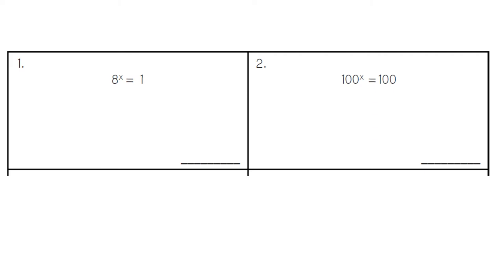In this case, 8 is our base number. We're missing the exponent, which is located by the variable, and we know that the answer is 1. Our exponent is going to be a 0 because anything to the 0 power is 1. So 0 is our missing exponent.